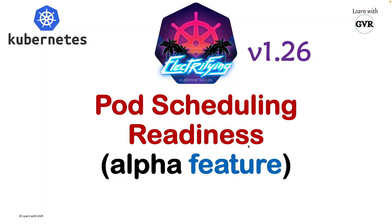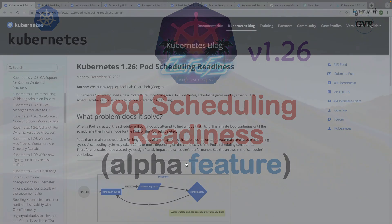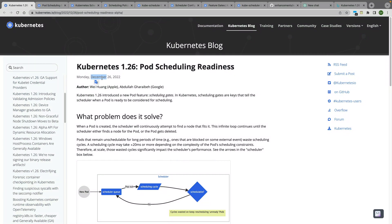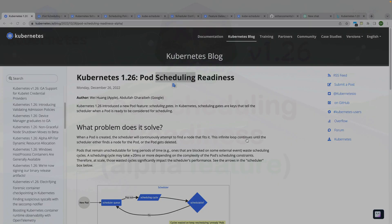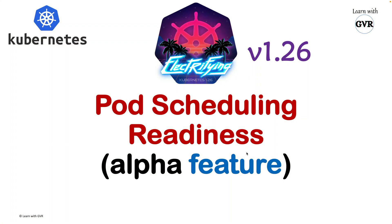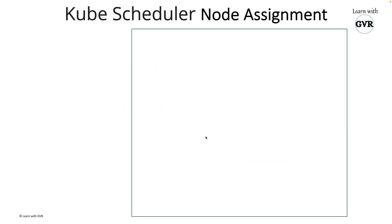Kubernetes 1.26 introduced a new alpha feature: Pod Scheduling Readiness. Released on December 26, 2022, on the Kubernetes blog, this feature is related to scheduling. Let's first understand what scheduling is and how it works, and then we'll cover Pod Scheduling Readiness.